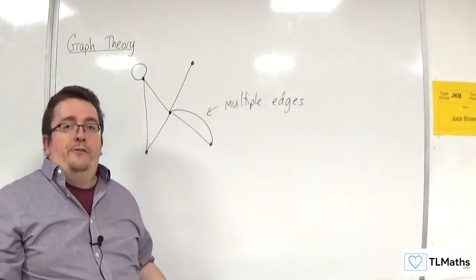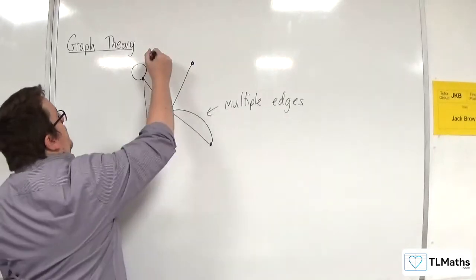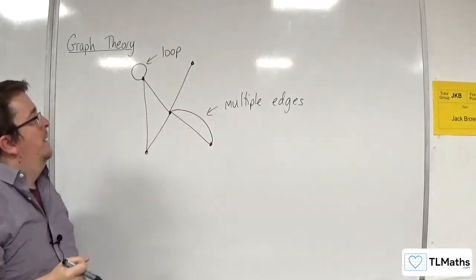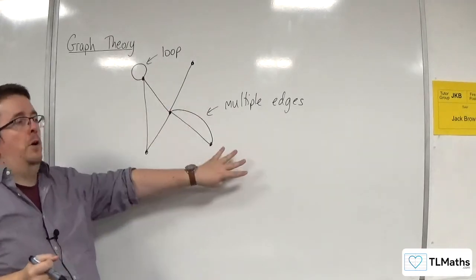Okay, that's quite often a feature that you see. So this is referred to as a loop. So we've got loops and we've got multiple edges.